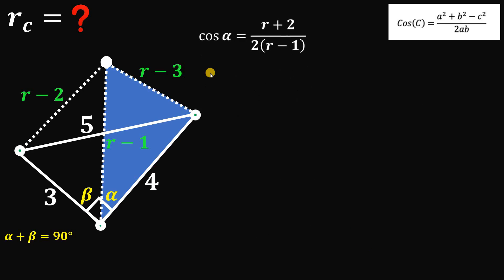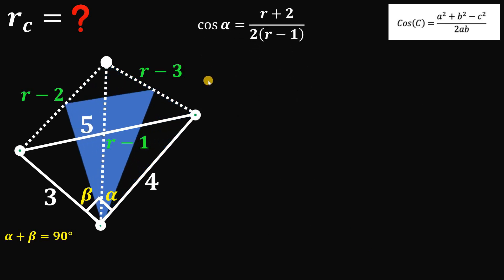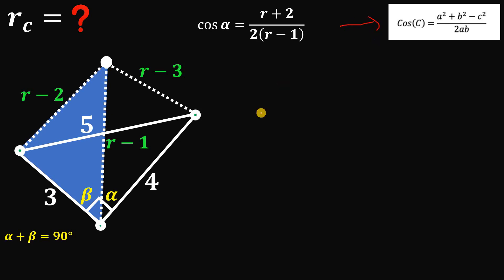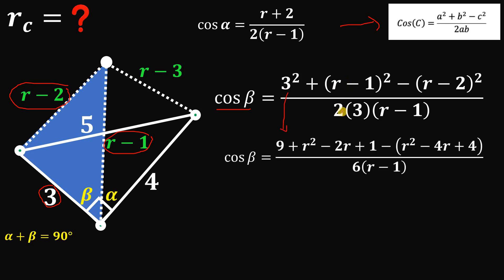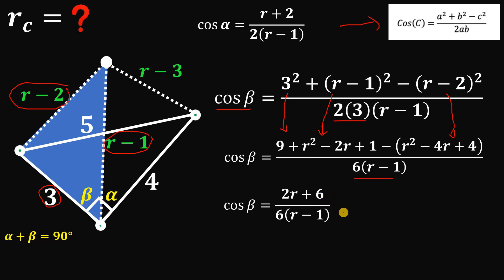Next, let's apply the law of cosines to the other triangle. Cosine of beta equals 3 squared plus (R minus 1) squared minus (R minus 2) squared, all over 2 times 3 times (R minus 1). Simplifying the numerator, we get cosine of beta equals (R plus 3) all over 3 times (R minus 1).